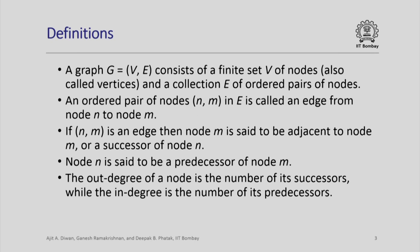So what is a graph? It consists of a finite set V of nodes, also called vertices, and a collection E of ordered pairs of nodes. If an ordered pair (n, m) is in the set E, it is said to be an edge from node n to node m. So E is a collection of edges, and if (n, m) is an edge then we say node m is adjacent to node n, or a successor of node n. Node m is like a next node of n, but n can have any number of successors, defined by the set of edges in the graph G.